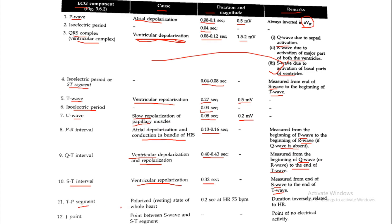The TP segment represents the polarized resting state of the whole heart. Its normal duration is 0.2 second at a heart rate of 75 beats per minute, and its duration is inversely related to heart rate. The J point is the point between the S wave and the ST segment — it is the point of no electrical activity.